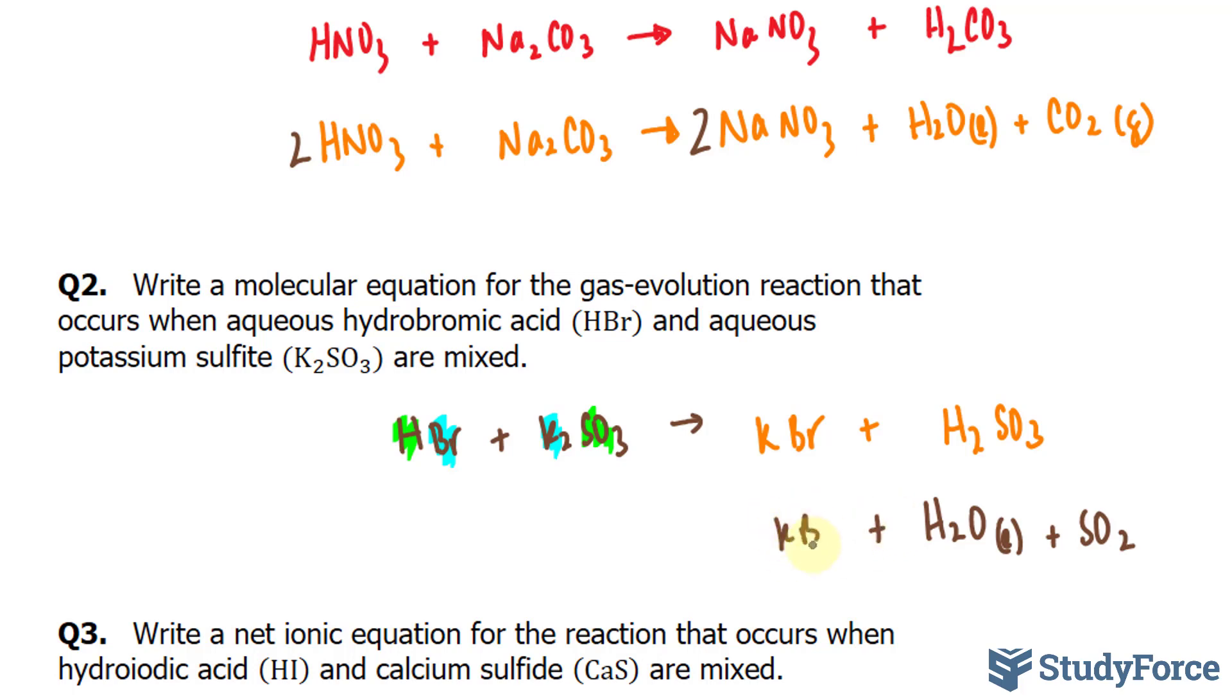So, let's rewrite this: HBr plus K2SO3 produces KBr plus H2O and SO2, and make sure that this is balanced. If it's not, then it's wrong. To balance this, we'll place a 2 in front of this compound, and another 2 in front of here. Notice that the potassiums are balanced, and so are the hydrogens, and everything else as well.